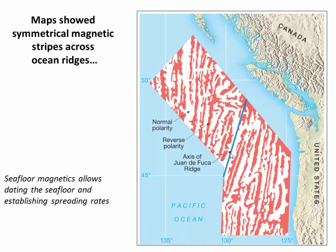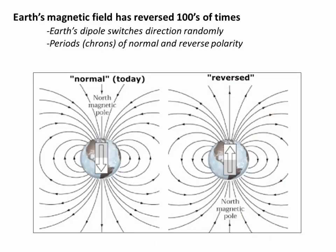As those profiles gave way to maps, it became clear that those magnetic oscillations were actually magnetic stripes, which were broadly symmetric on either side of mid-ocean spreading ridges — this stripe corresponds to this stripe, this stripe to this stripe. Eventually, scientists realized that these magnetic stripes were actually recording seafloor spreading at mid-ocean ridges.